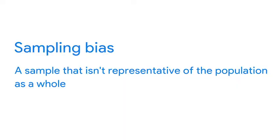As a quick refresher, sampling bias is when a sample isn't representative of the population as a whole. For example, if you're doing research on commuters and only survey people walking by on the sidewalk, you'll miss out on input from people who ride bicycles, drive, or take the subway. You need all sides of the story to avoid sampling bias.